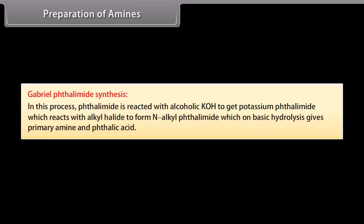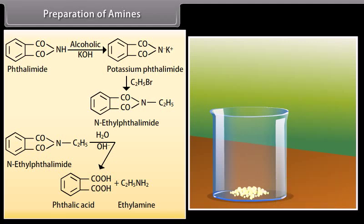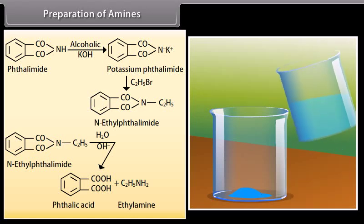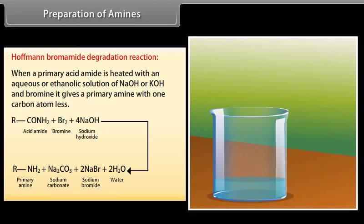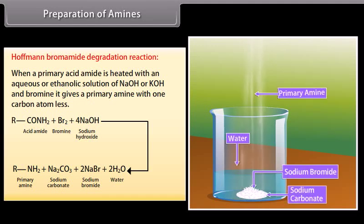Gabriel phthalimide synthesis: Phthalimide is reacted with alcoholic KOH to get potassium phthalimide, which reacts with alkyl halide to form N-alkyl phthalimide. Basic hydrolysis then gives primary amine and phthalic acid. In the Hoffmann degradation, phthalimide heated with aqueous or ethanolic NaOH or KOH and bromine gives a primary amine with one carbon atom less.